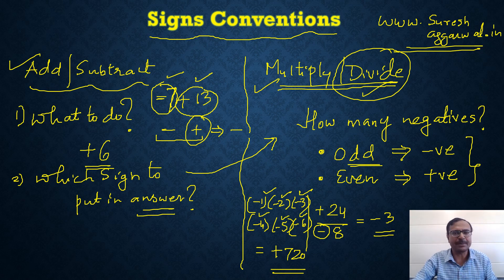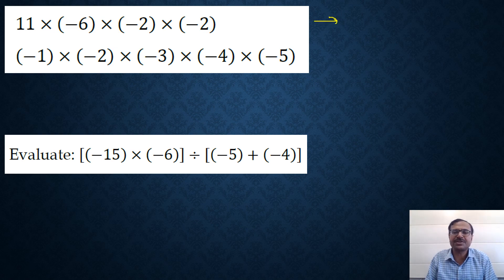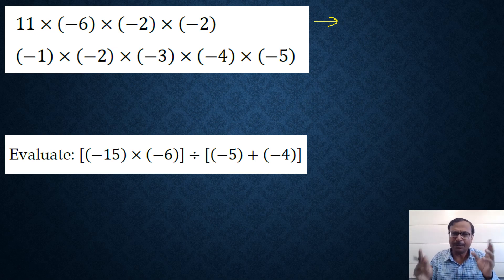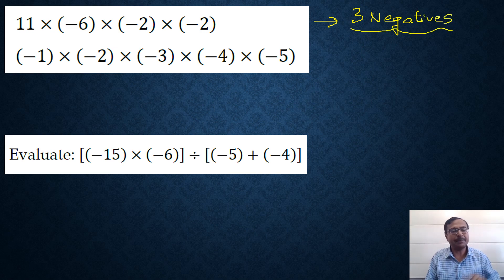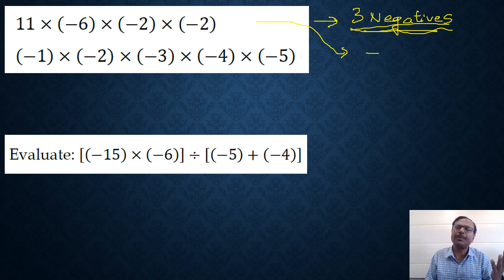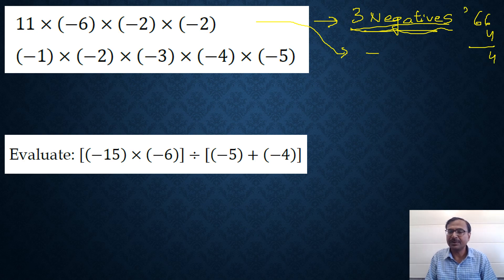Let's apply these rules to solve some questions. Look at the first question: 11 times minus 6 times minus 2 times minus 2. This is multiplication, so count the negatives. The first integer 11 is positive, then minus 6, minus 2, minus 2 — that's 3 negatives, which is odd, so the answer is negative. Multiply the whole numbers: 11×6=66, 66×4=264. So the answer is minus 264.